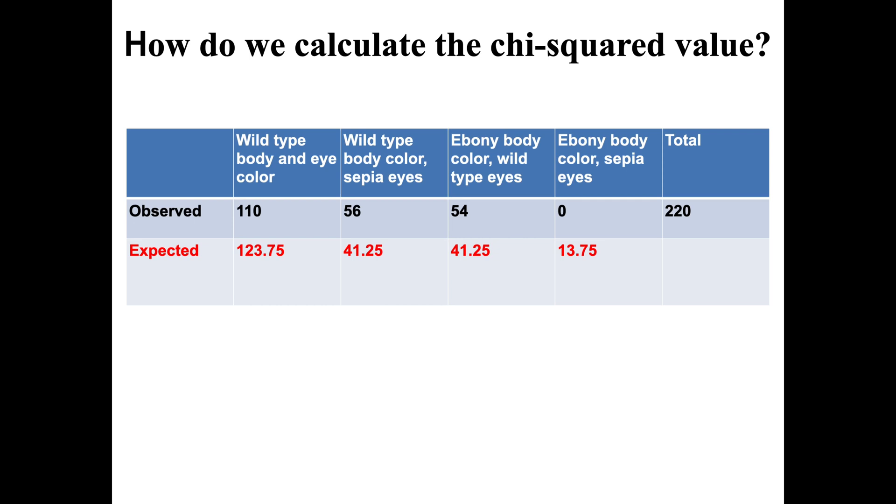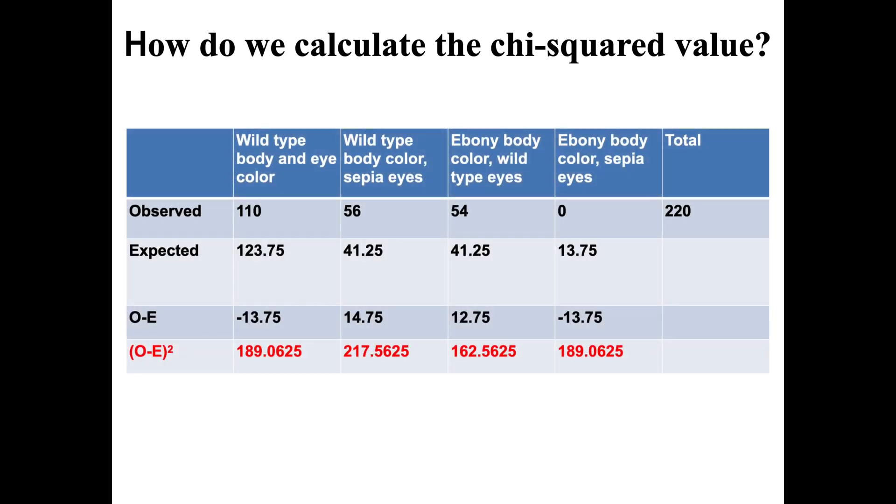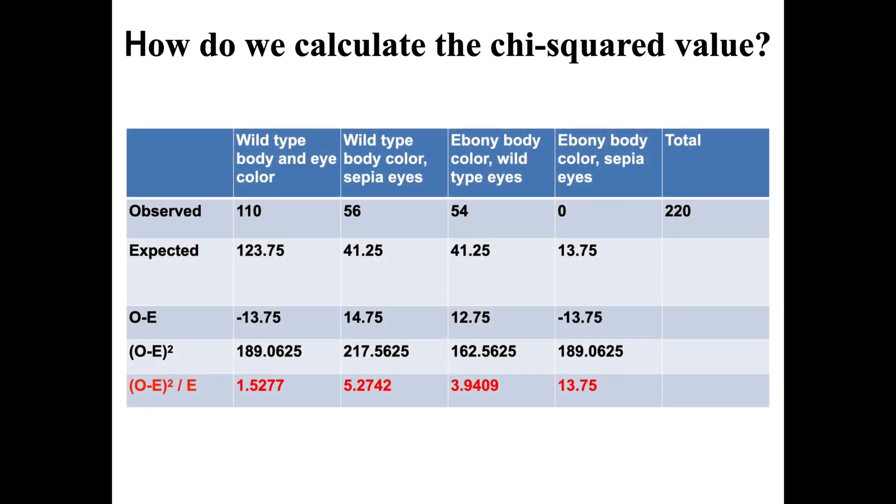If you calculate those values, you get the expected values in the second row. From there we can do observed minus expected, and then we can take that value and square it. After we square it, we have to divide it by the expected value.